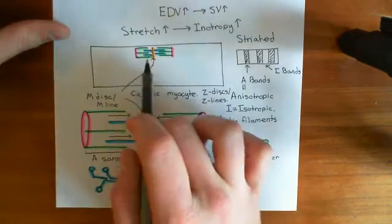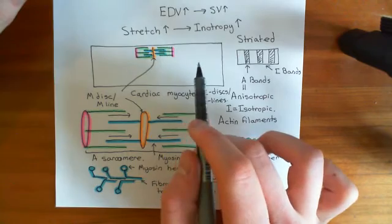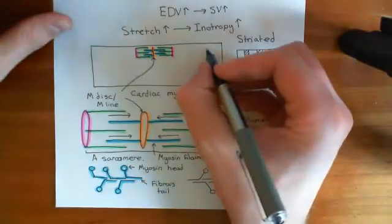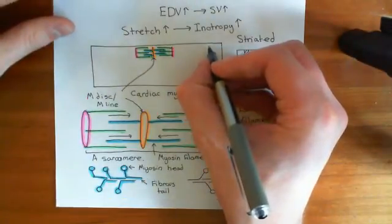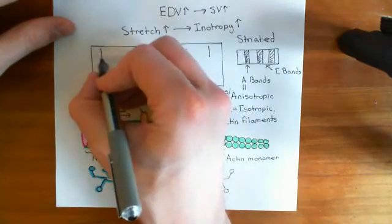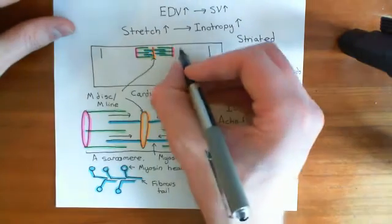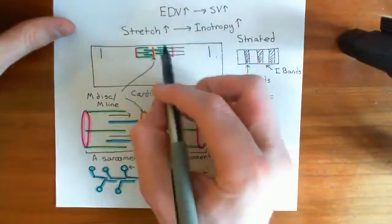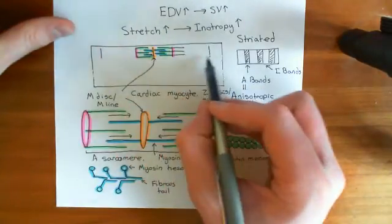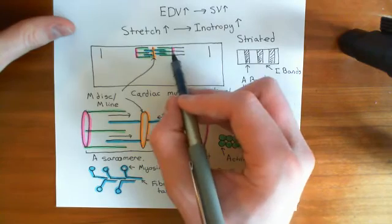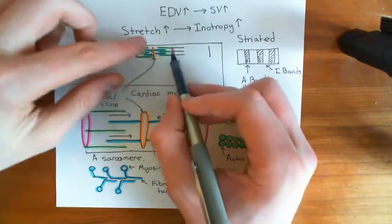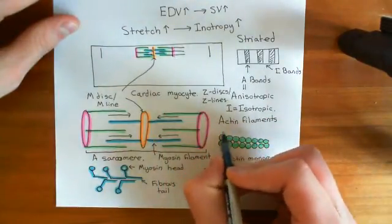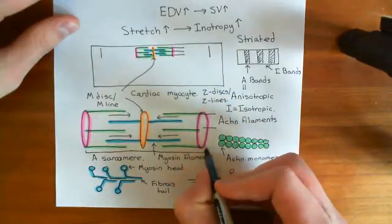We've drawn one sarcomere within this cardiac muscle cell. What we now need to do is draw a few more, because you don't just have one. What you have instead is sarcomeres in rows. So you'll have another sarcomere here and another sarcomere here. This Z-disc that was part of this sarcomere will also be part of the next sarcomere along, so it will have actin filaments going, attached to both sides of this Z-disc, projecting off in this direction.